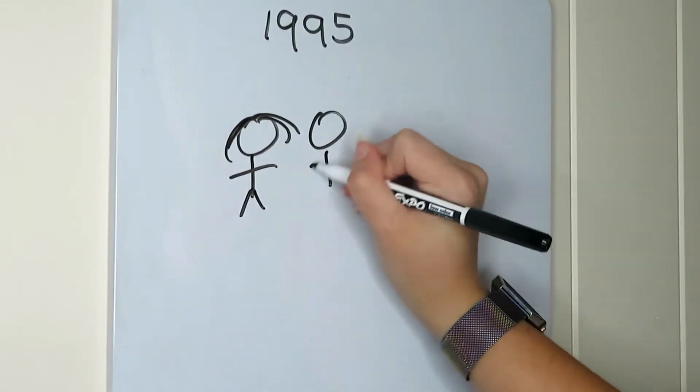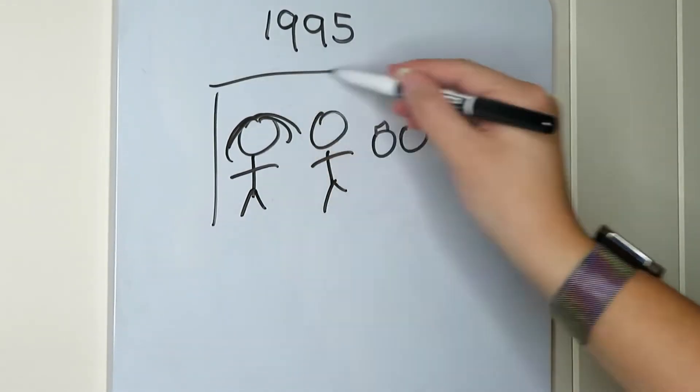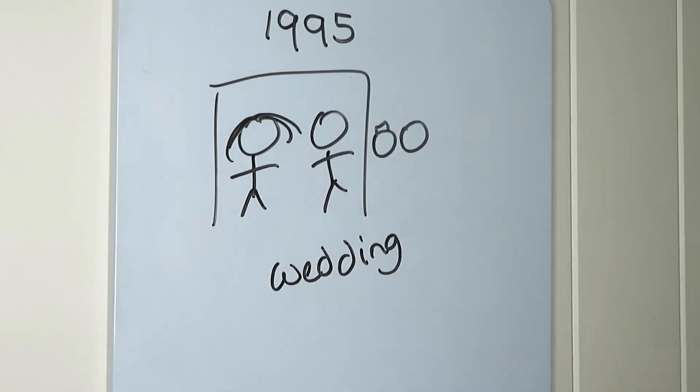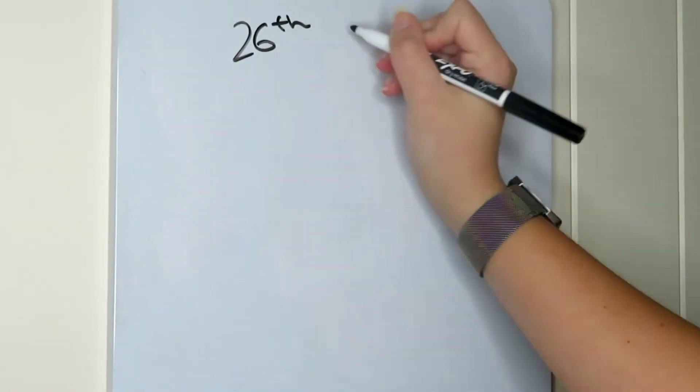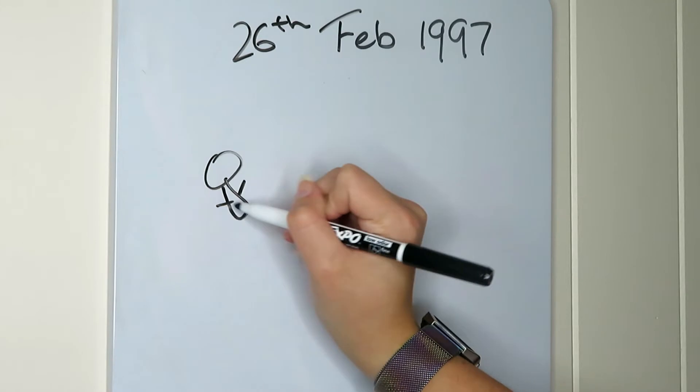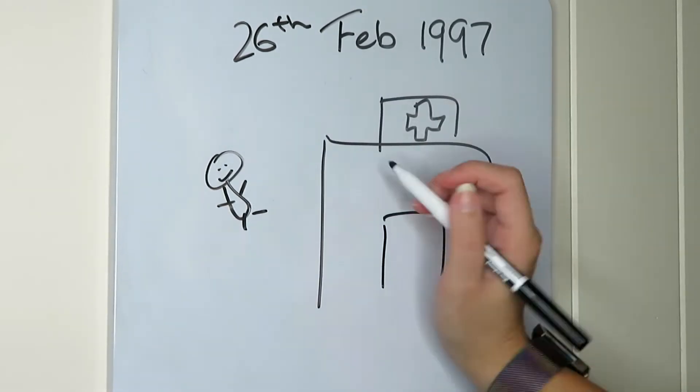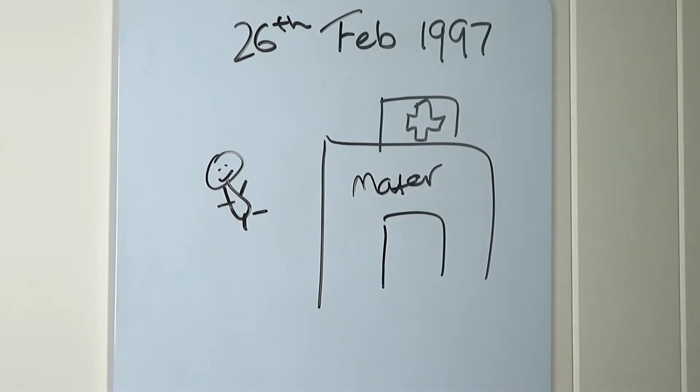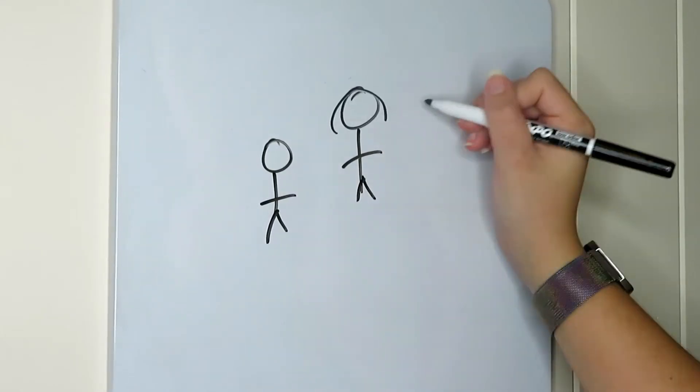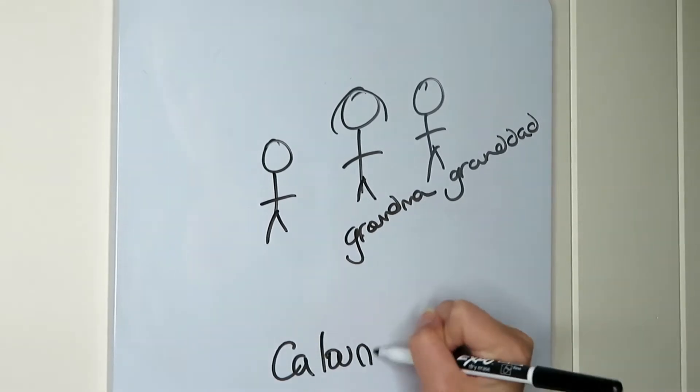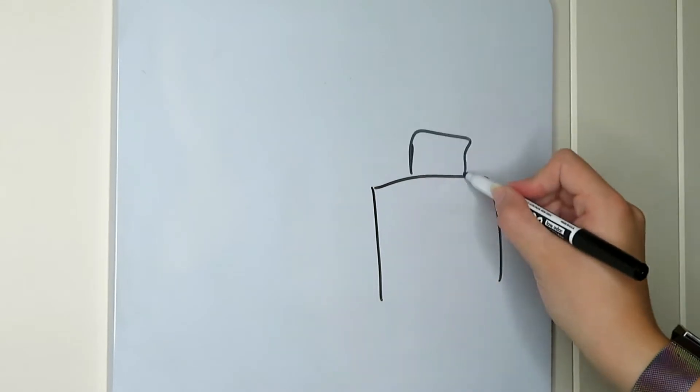They got married in October of 1995 and I was born 16 months later on the 26th of February 1997 in the Mardor Hospital. When I was 18 months I would spend three days out of every week up in Calandra with my grandparents so my parents could work.